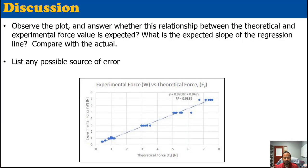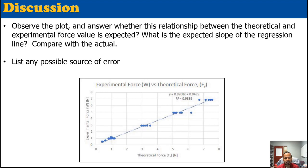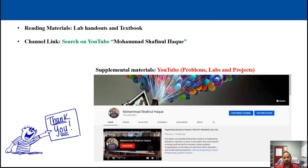Now that we've collected our data, plot the theoretical force F on the x-axis and the measured weight on the y-axis, with separate clusters for each deflector type. Observe the plot and answer whether the relationship between experimental and theoretical values is as expected. If it deviates, quantify this by measuring the slope and comparing with the expected value. Also list any possible sources of error that may cause deviation. That wraps up Lab 7 — next we will cover Lab 8, the final lab. See you then, thank you!